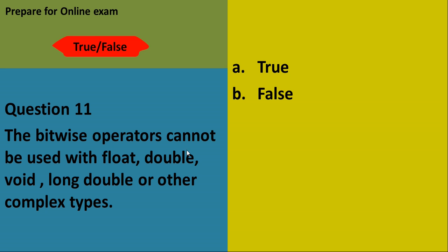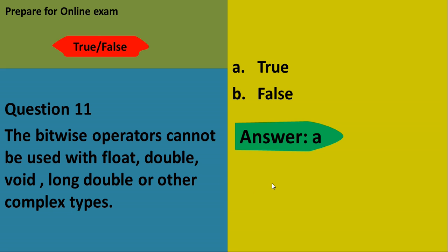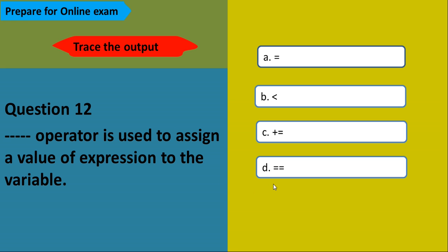The bitwise operator cannot be used with float, double, void, long double, or other complex types. True or false? It is true — you cannot use the bitwise operator with those data types.